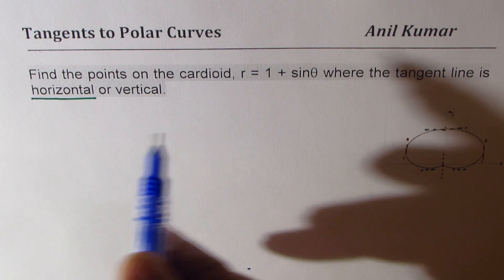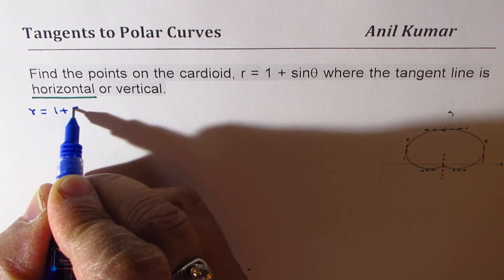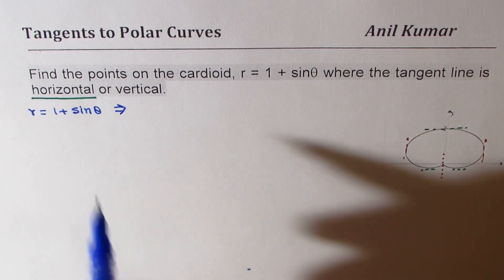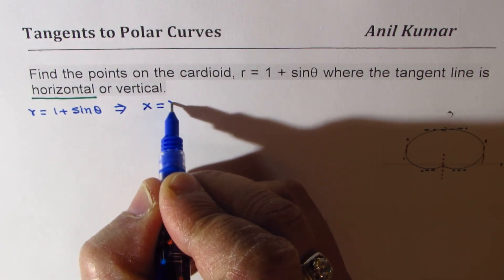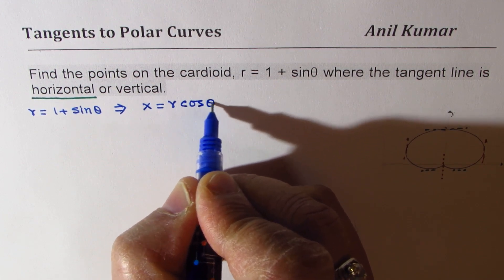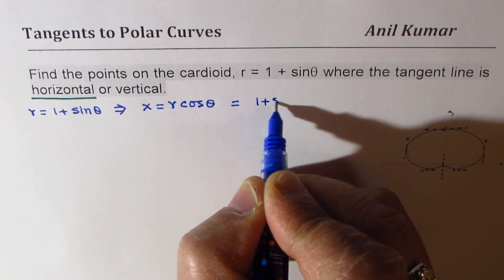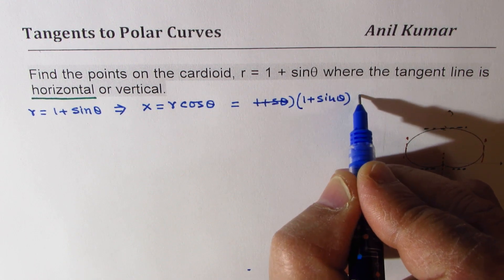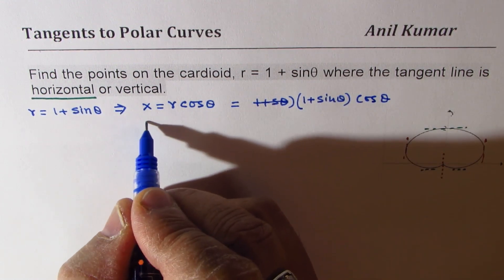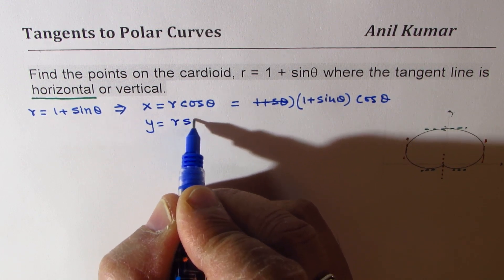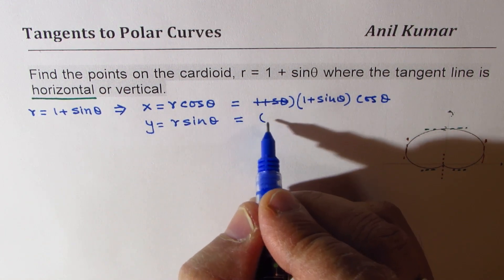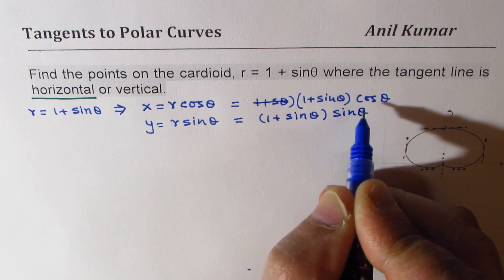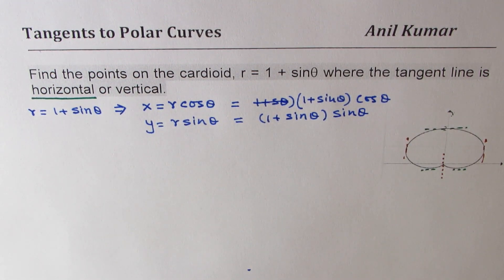We are given r equals 1 plus sine theta. Let us convert to Cartesian coordinates. We get x equals r cos theta, which equals 1 plus sine theta times cos theta. As far as y is concerned, it will be r sine theta in Cartesian coordinates — r is 1 plus sine theta times sine theta. So that is how we describe it in the Cartesian plane.